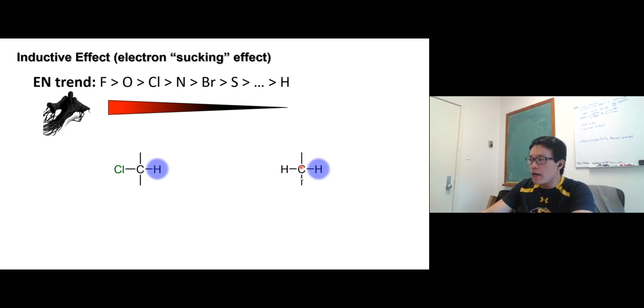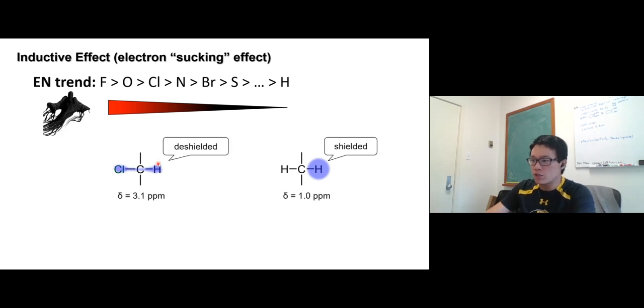Let's see what happens. If these two protons - the proton on the right is just a regular proton, but on the left side is attached to the carbon that's next to chlorine - which one has a lower electron density, left or right? Of course, it's going to be on the left side. Chlorine sucks electron away from the proton. So we have a deshielded proton and a shielded proton, the chemical shift about 3.1 ppm versus 1 ppm.